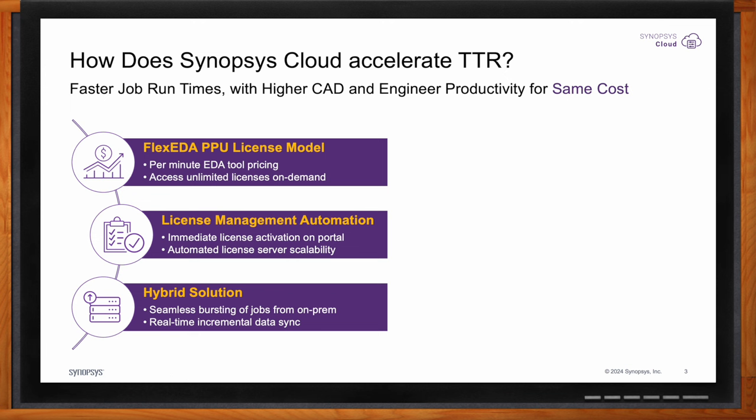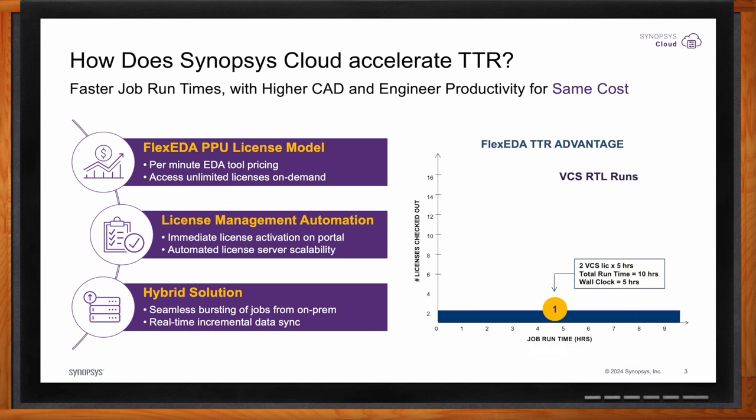The hybrid solution makes it easy for customers with on-premises data centers who are running out of compute capacity to burst to cloud as needed, on demand, on the fly. Our solution is designed specifically for EDA workloads — it splits jobs automatically. Depending on what capacity is available on-prem, that part of the EDA job runs on-prem; the balance automatically moves to the cloud with real-time data synchronization in incremental chunks, so it does not impact performance. Let me give you an illustration: say you have two VCS licenses running on two cores of compute, and the job takes about five hours — a total of 10 compute hours.